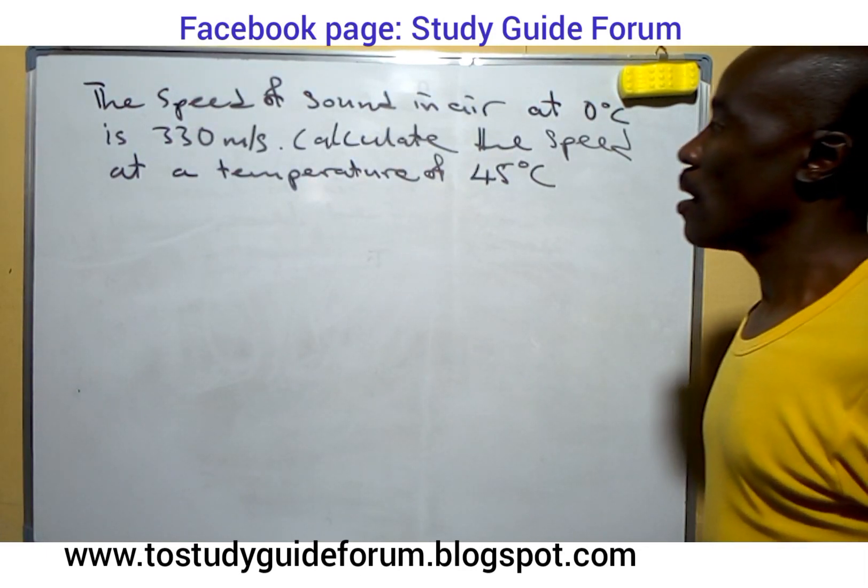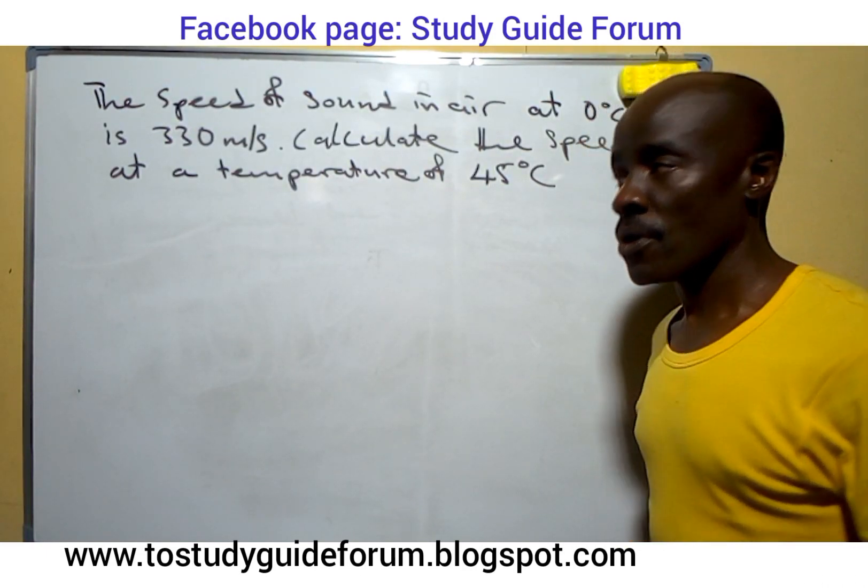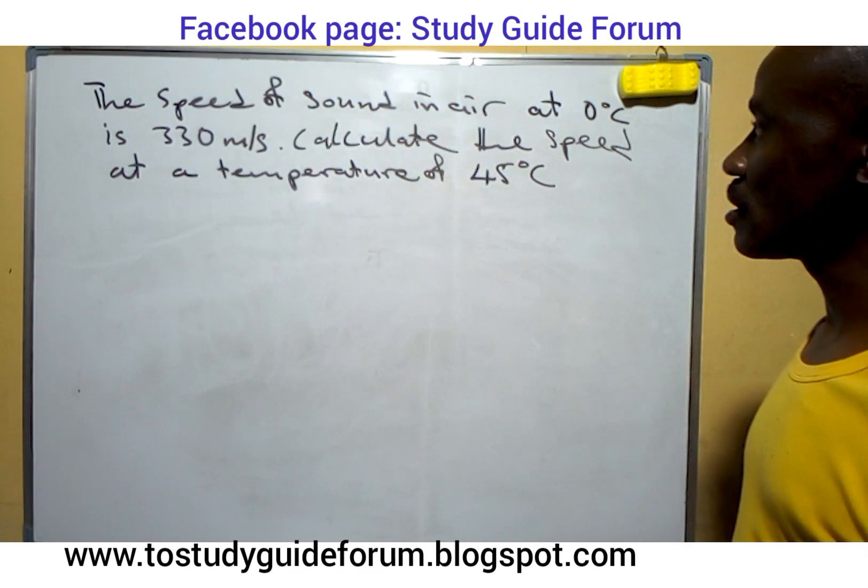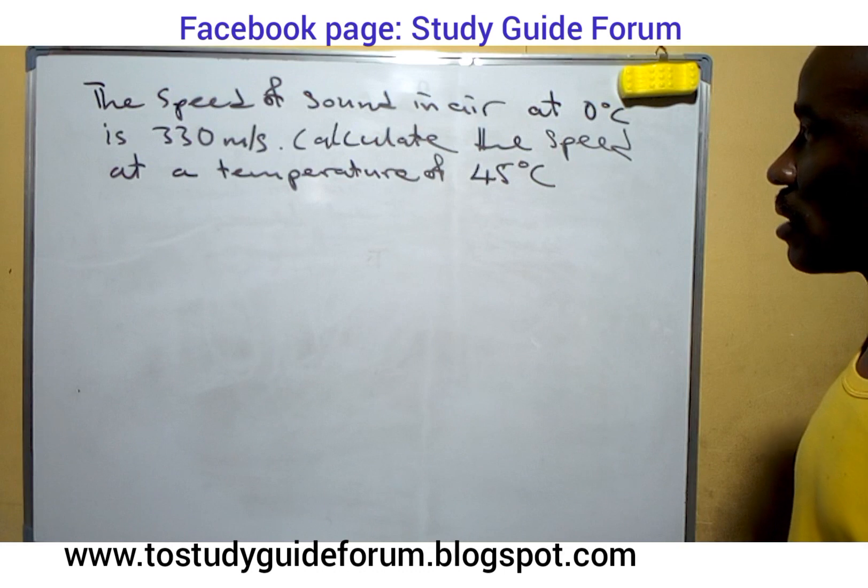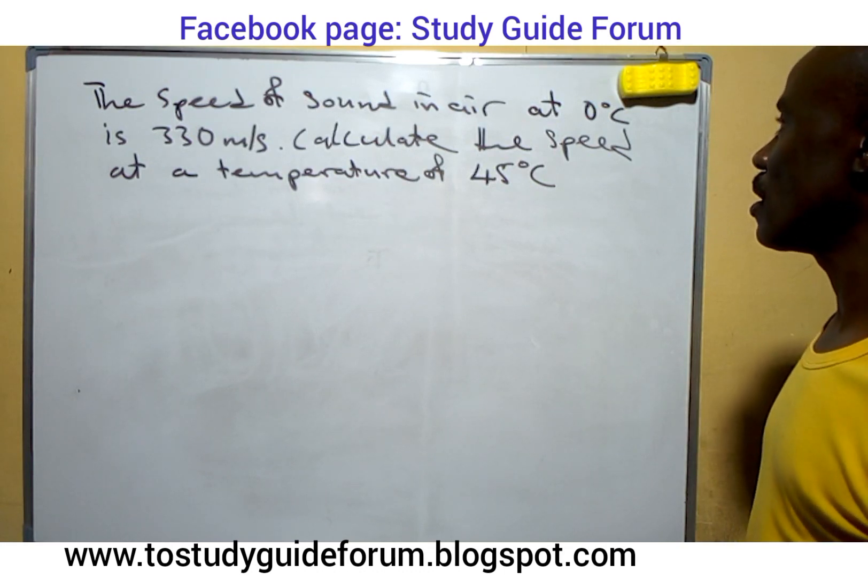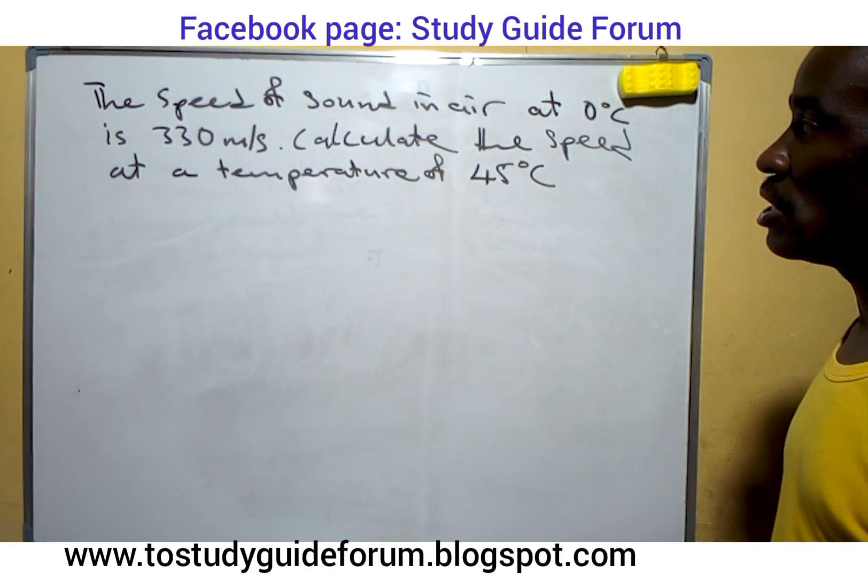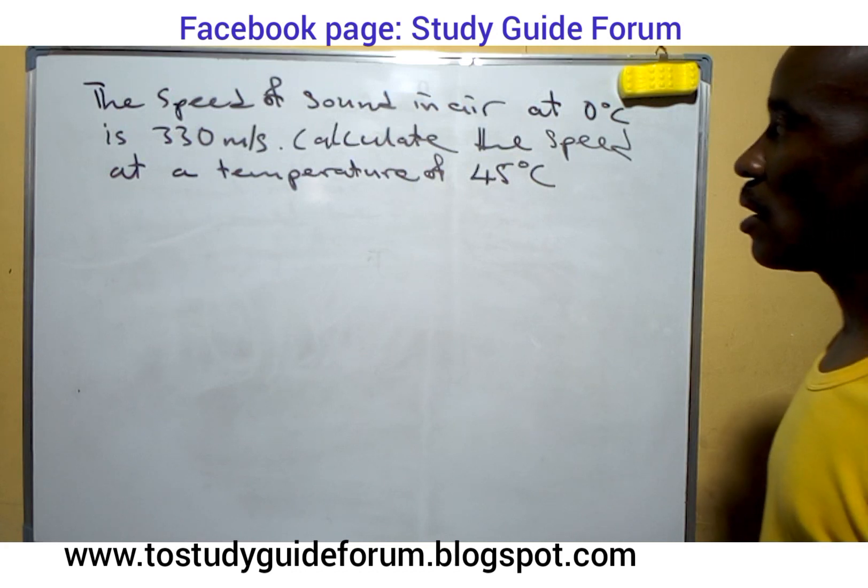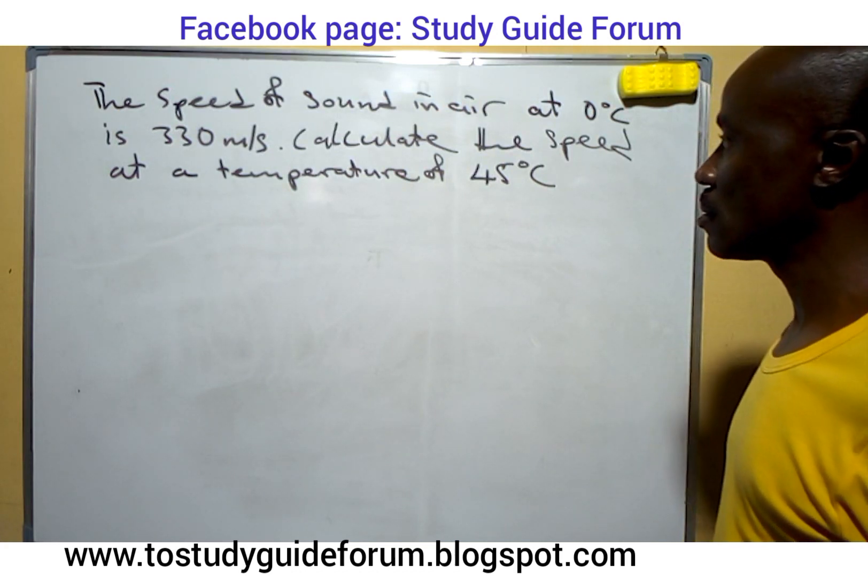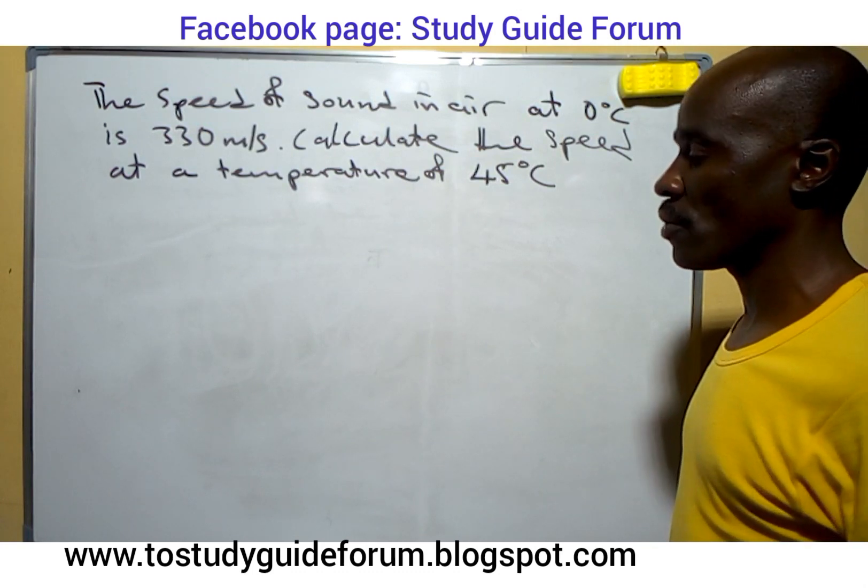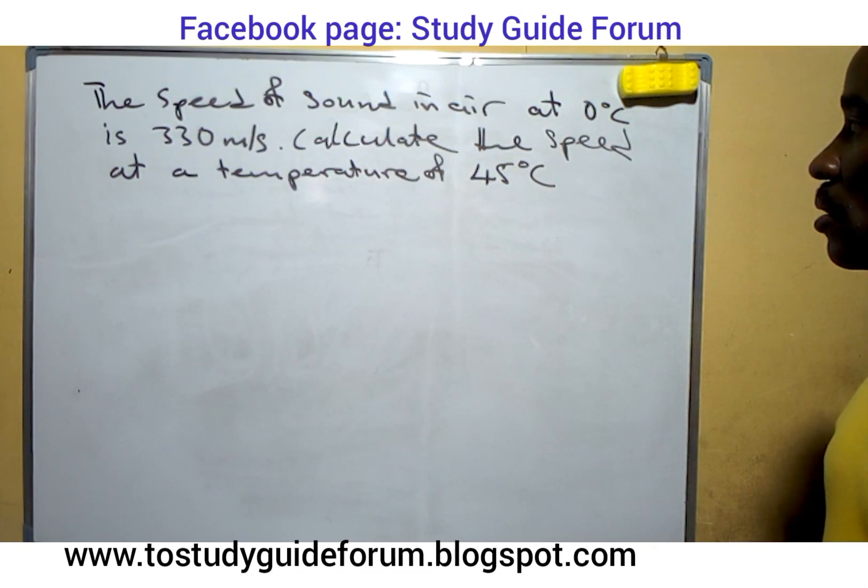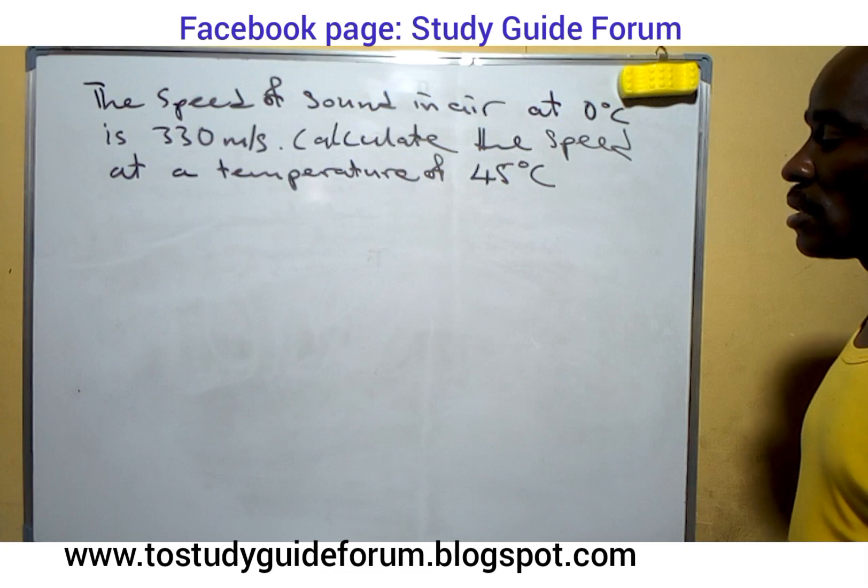Hello. You are welcome to another exciting moment. Here we have a question that we are going to look at. It says that the speed of sound in air at zero degrees Celsius is 330 meters per second. Calculate the speed at a temperature of 45 degrees Celsius.